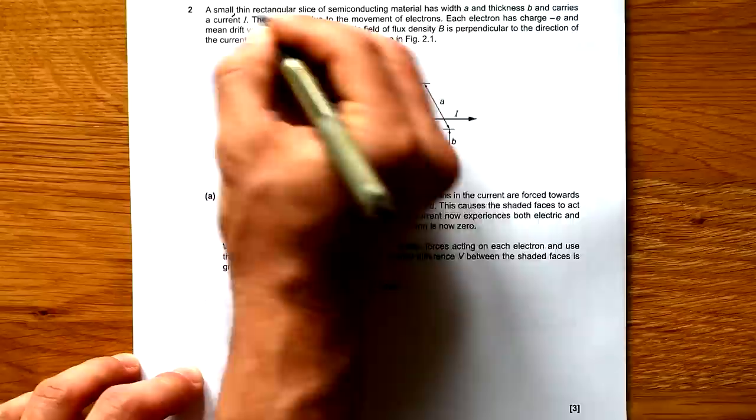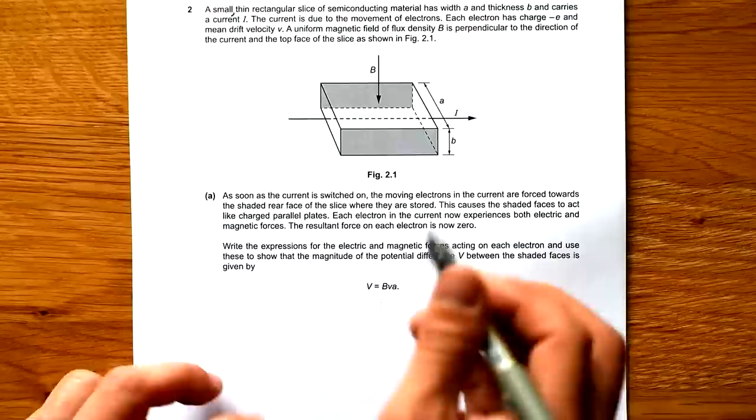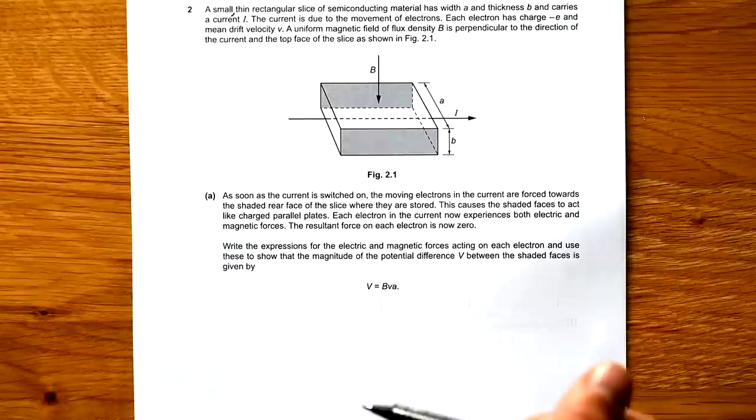So always start with alpha decays first to get rid of the mass, because afterwards when you deal with the beta decays, it's only one thing that's changing. Question two: A small, thin - I think we need a comma in there - rectangular slice of semiconducting material has width A and thickness B and carries current I. Current is due to the movement of electrons. Each electron has charge minus E and mean drift velocity V. Uniform magnetic field of flux density B is perpendicular to the direction of the current and of the top face of the slice shown. So the currents are going that way. They don't have it complicated, don't they?